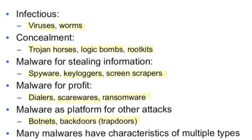Here are different features and types — pay attention. The stuff that's highlighted is going to be your vocabulary. We've got: infectious — viruses and worms; concealment — Trojan horses, logic bombs, and rootkits; malware for stealing information — spyware, keyloggers, screen scrapers; malware for profit — dialers, scareware, ransomware; and malware as a platform for other attackers — botnets and backdoors, also known as trapdoors. Many malwares have characteristics of multiple types.